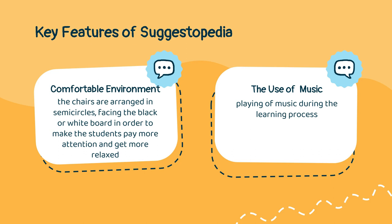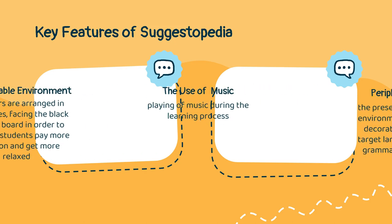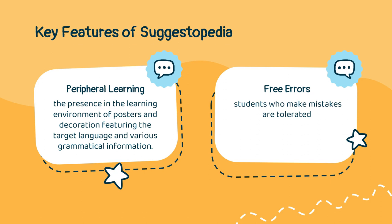The use of music also depends on the expected skills of the students, such as listening, grammar, pronunciation, discussion, etc. Third on the list is peripheral learning. Students learn language not only from direct instruction but also from indirect instruction. It is encouraged through the presence in the learning environment of posters and decorations featuring the target language and various grammatical information. These are changed every day, and students learn how to produce simple sentences by using the posters or grammatical information.